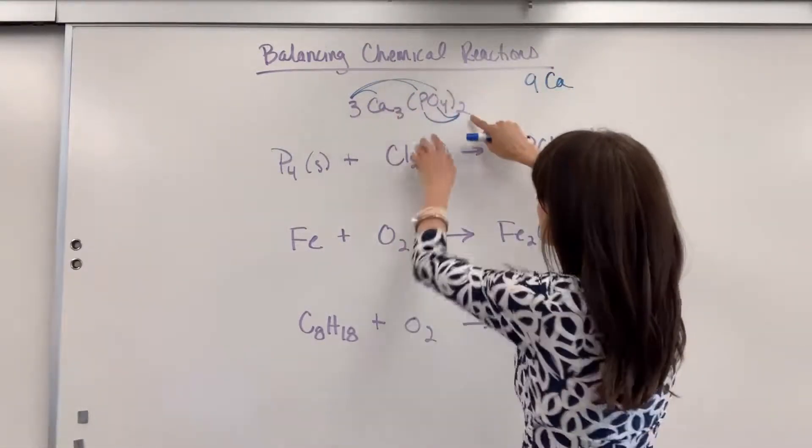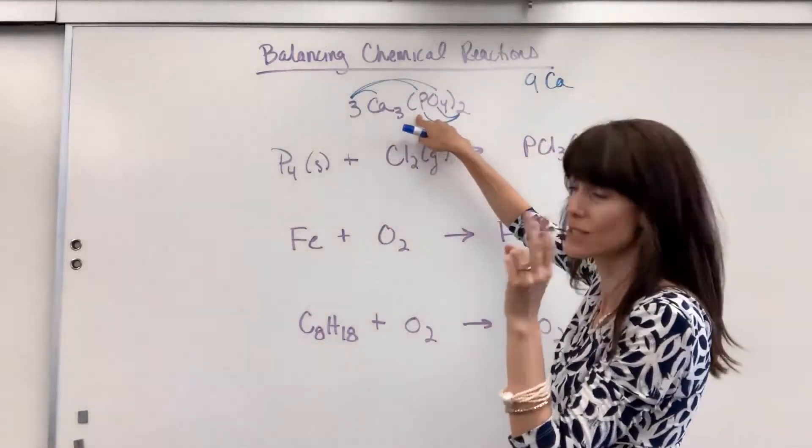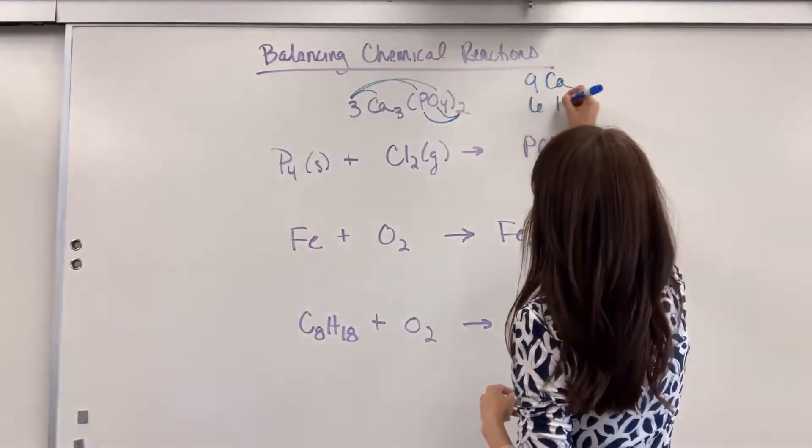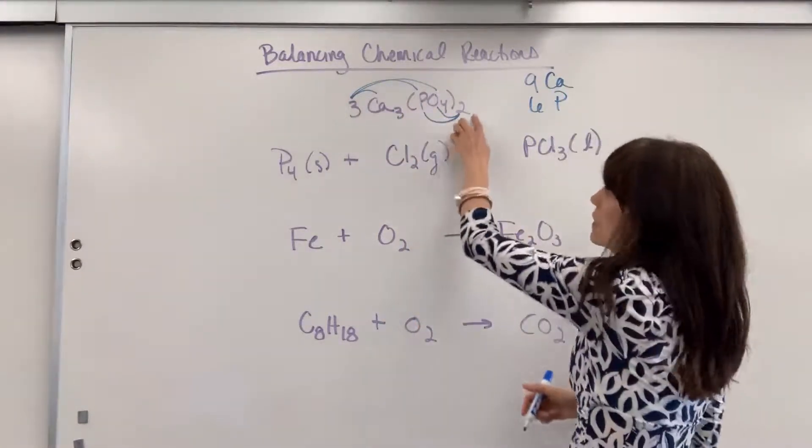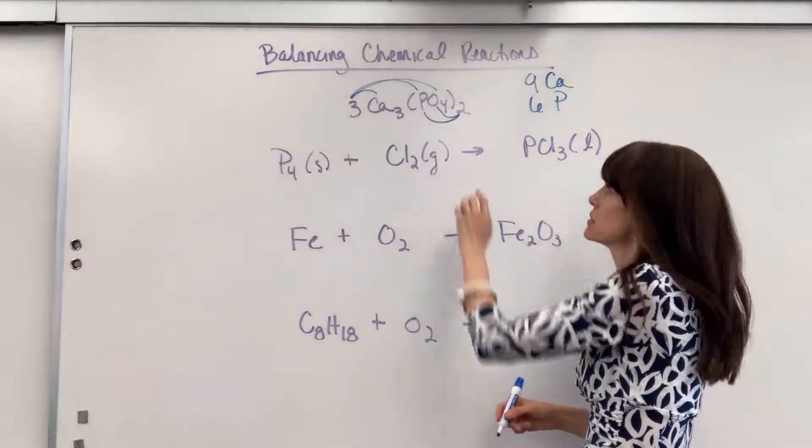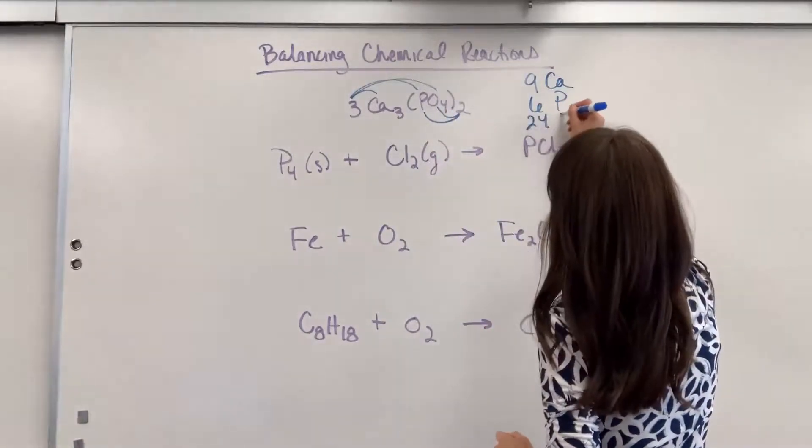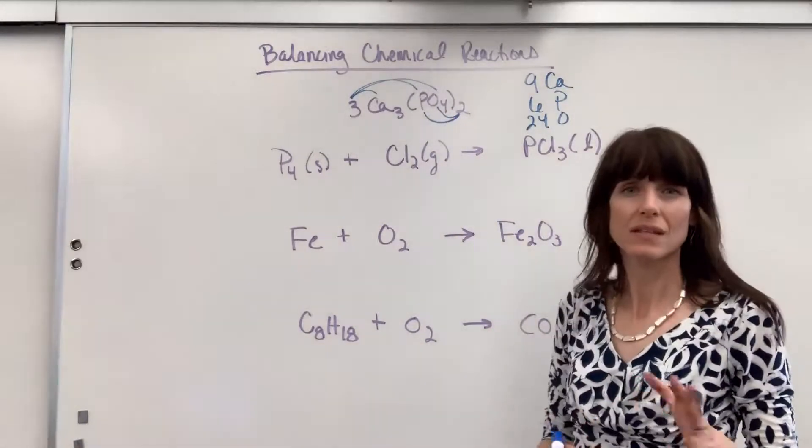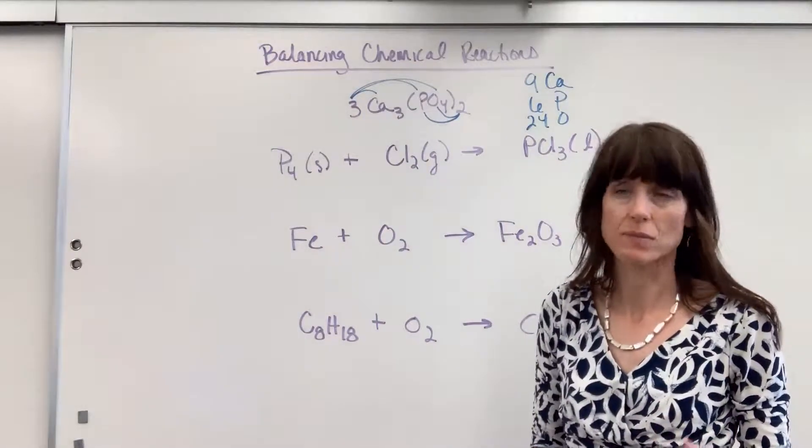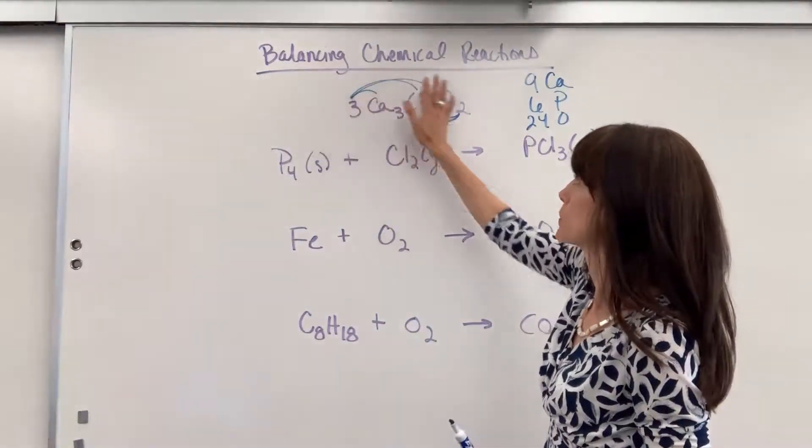Three times two phosphorus. Remember, I'm going to have six phosphorus. And then three times I have eight oxygens. We're going to have 24 oxygen. So there's a little reminder on counting atoms. The coefficient distributes to every atom.